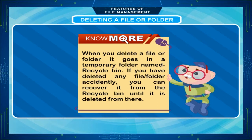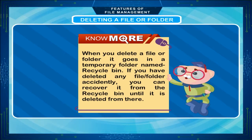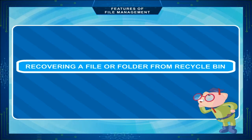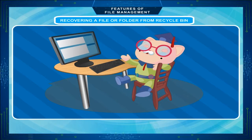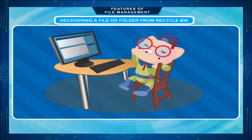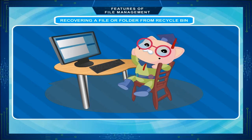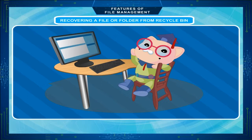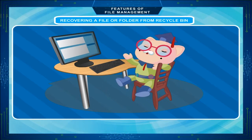When you delete a file or folder, it goes into a temporary folder named the Recycle Bin. If you have deleted any file or folder accidentally, you can recover it from the Recycle Bin until it is deleted from there. The Recycle Bin is a folder where deleted files or folders are preserved for a certain time so that they can be recovered after accidental deletion. Normally, the Recycle Bin folder appears on the desktop of Windows. You can recover the deleted item until it is not removed from the Recycle Bin, so you must recover it as soon as possible.